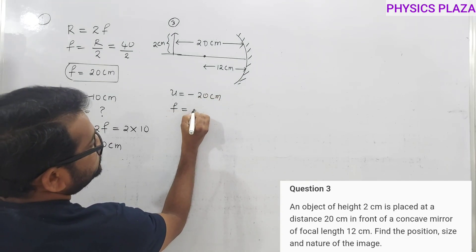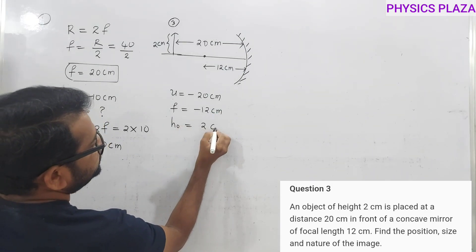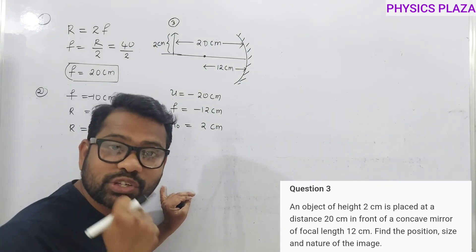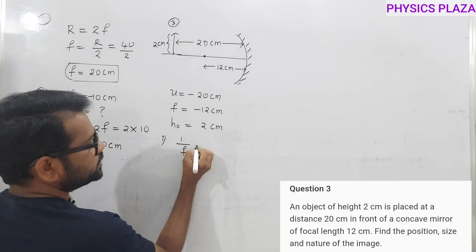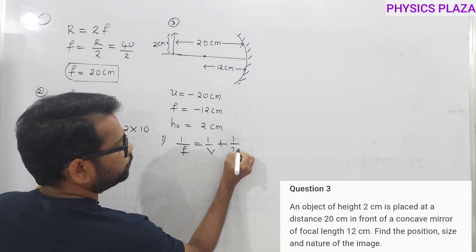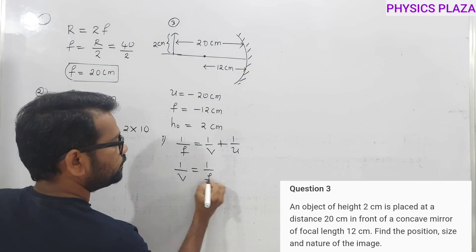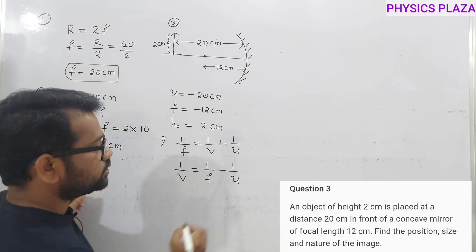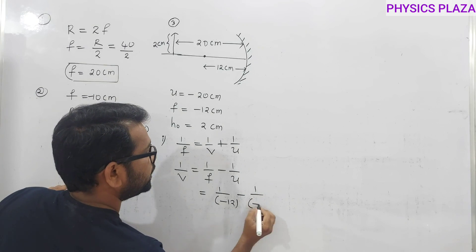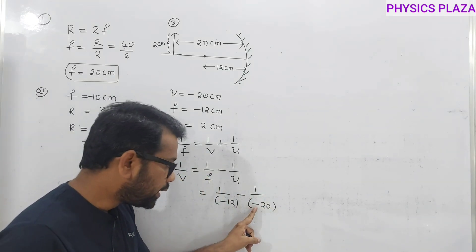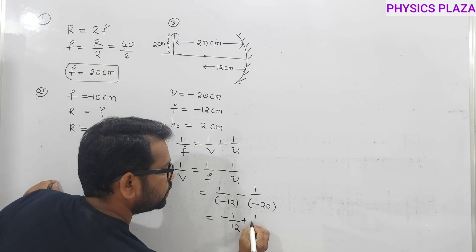We need to calculate image distance v. Using the mirror formula: 1/v = 1/f − 1/u. Substituting: 1/v = 1/(−12) − 1/(−20). That is: 1/v = −1/12 + 1/20. Taking LCM of 12 and 20 (which is 60): 1/v = −5/60 + 3/60 = −2/60 = −1/30. Therefore v = −30 centimeters.